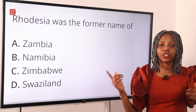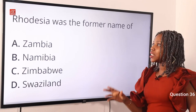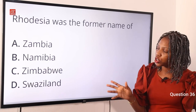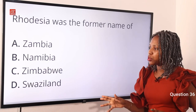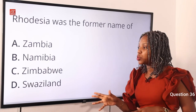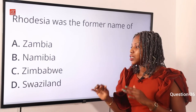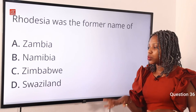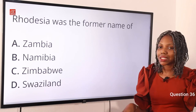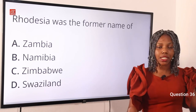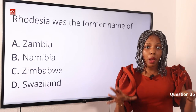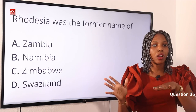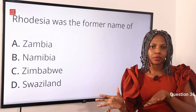Moving over to question 36. Rhodesia was the former name of: Option A, Zambia. Option B, Namibia. Option C, Zimbabwe. Option D, Swaziland. The answer is Zimbabwe — Option C. Zimbabwe is the correct name for the former Rhodesia.